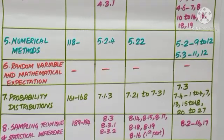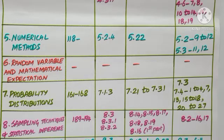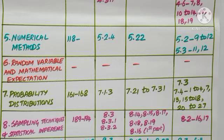Chapter 8: Sampling Techniques and Statistical Inference. Pages 189 to 194 — hypothesis testing section alone is deleted. Sections 8.3.1 and 8.3.2 are deleted. Related examples 8.14, 8.15, 8.17, 8.18, and 8.19 are deleted. In example 8.16, the first part alone (hypothesis testing) is deleted — only the confidence interval subsection remains. In Exercise 8.2, questions 16 and 17, which are from hypothesis testing, are deleted.